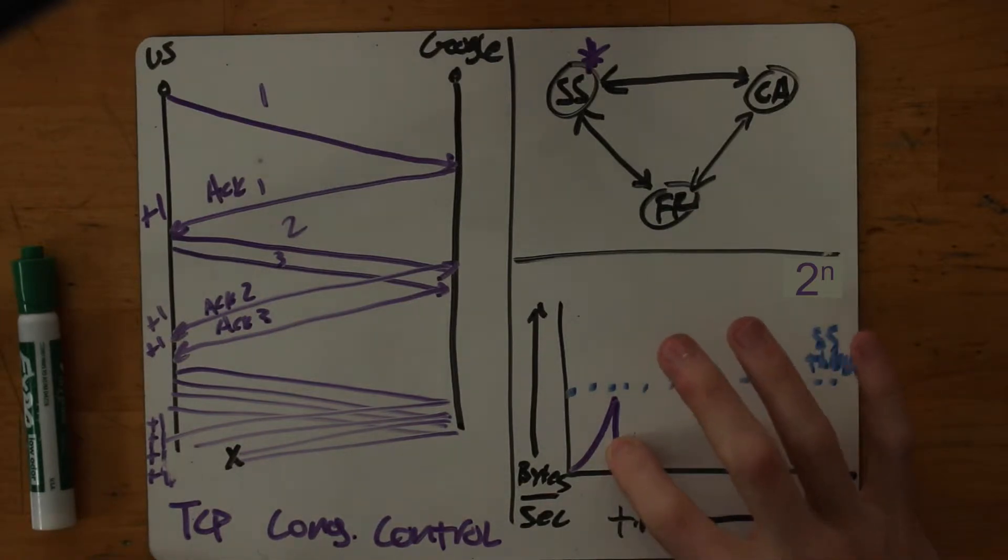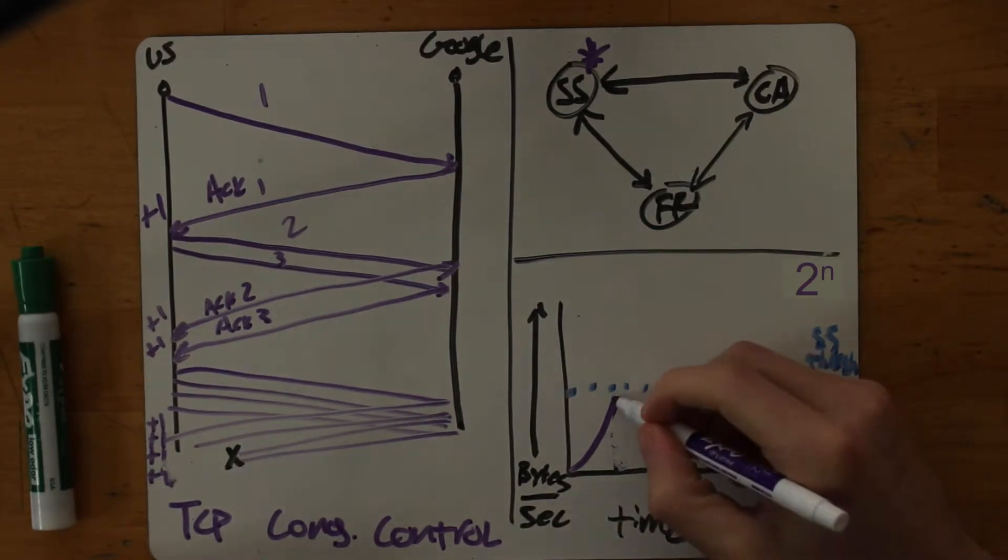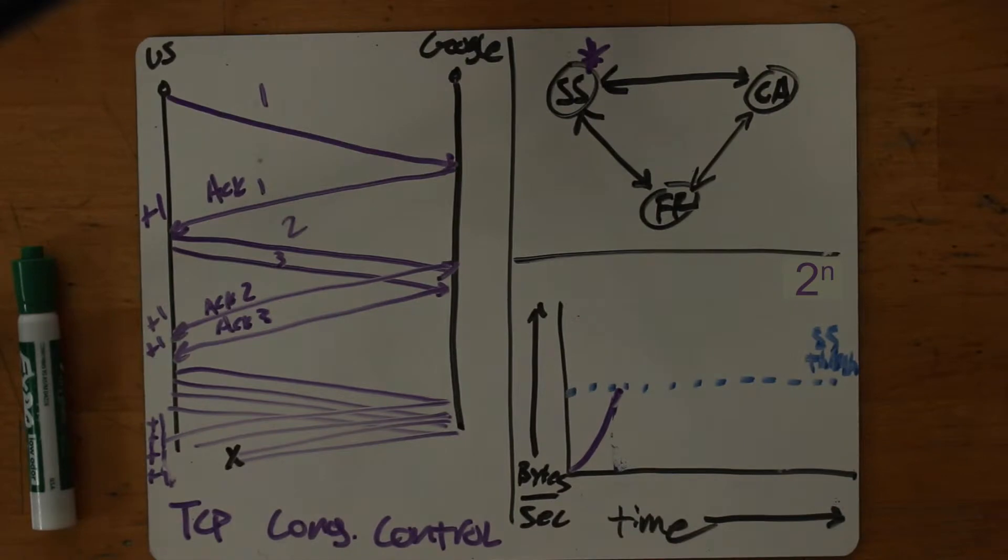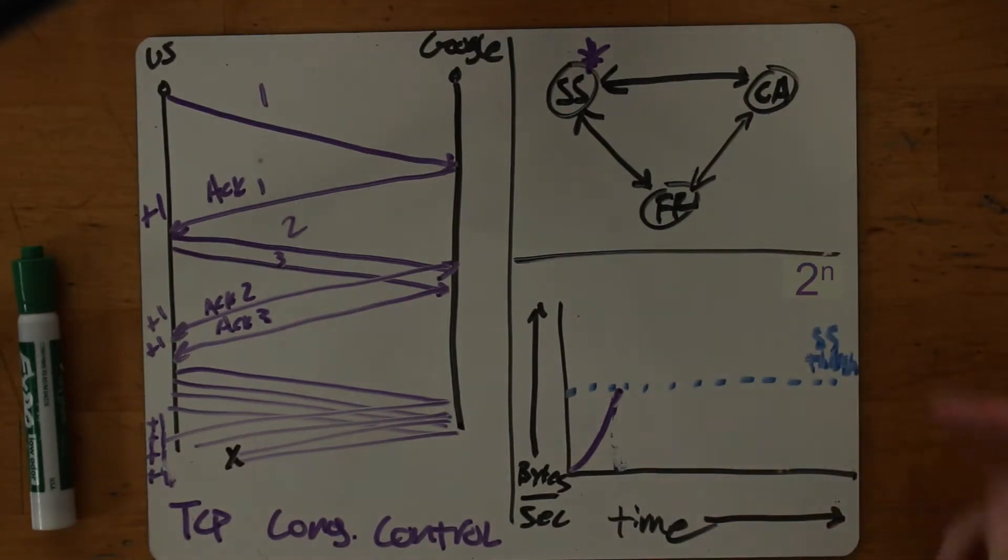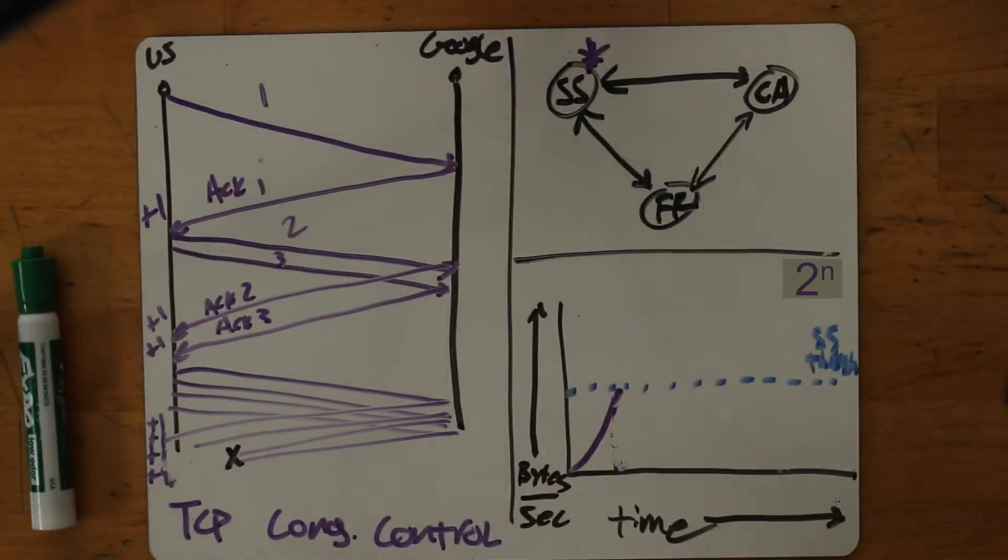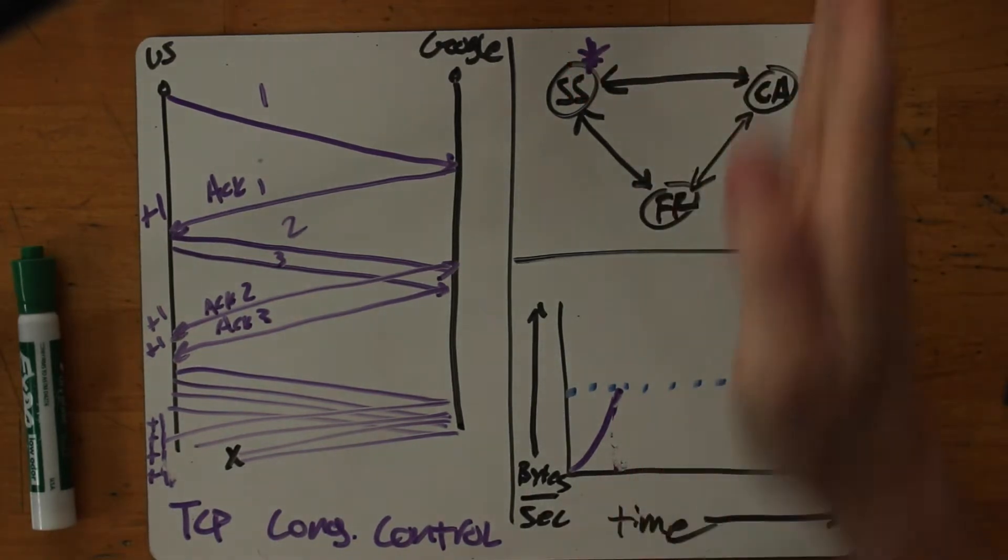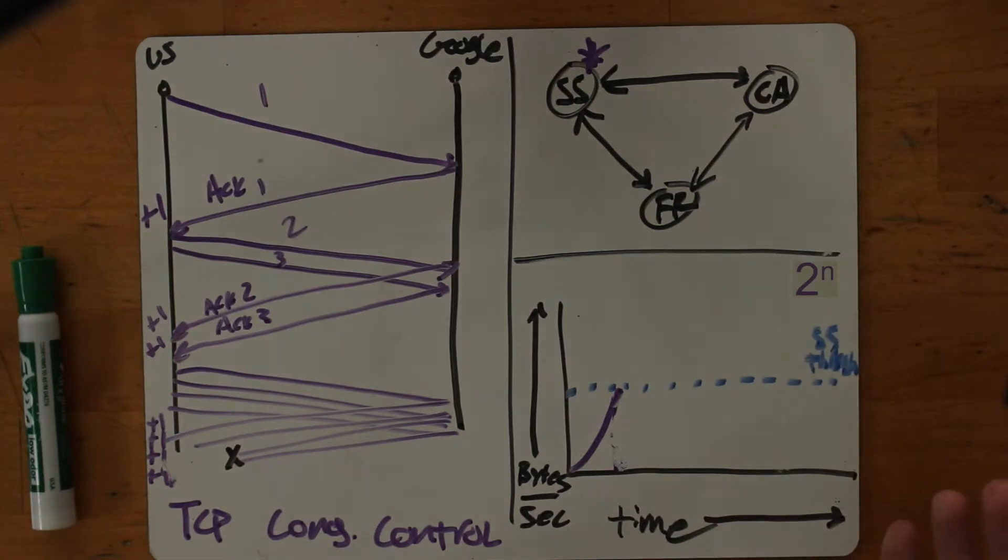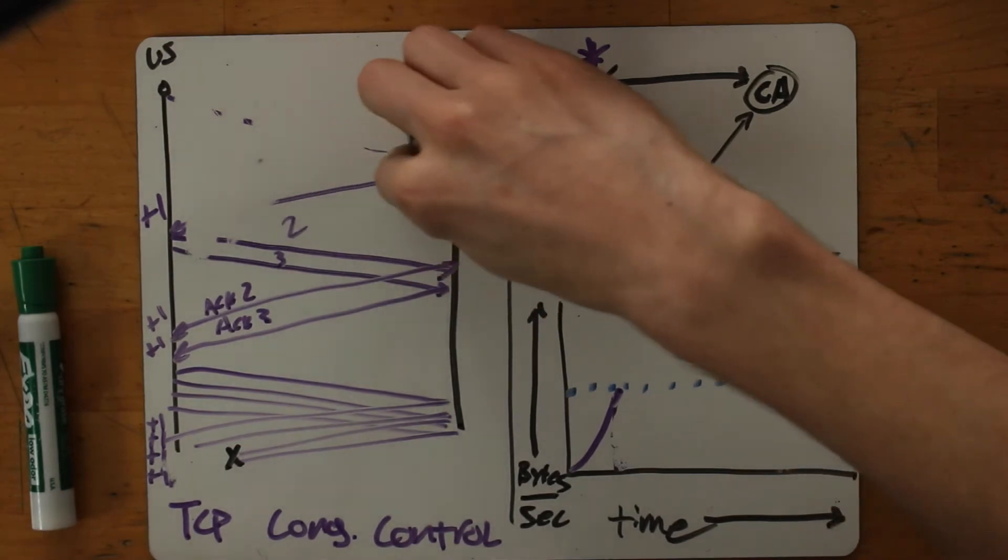Okay. In the other case, everything goes good, right? And we reach the slow start threshold. Then we back off a little bit. We were doing exponential, two to the n, one segment size, two segment sizes, four segment sizes, eight segment sizes, so on. We're gonna slow down now to avoid congesting the network. If we just exponentially increased our speed always, we're surely going to be putting too much traffic on the line. So what happens after we reach slow start, or after we reach the slow start threshold?